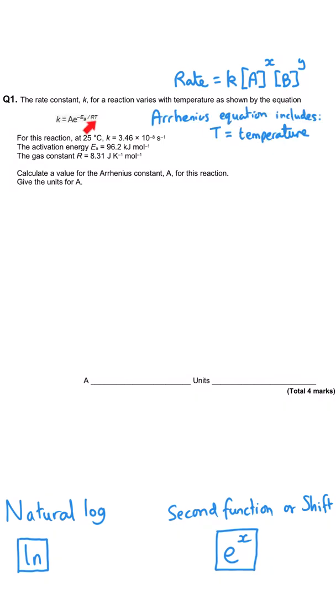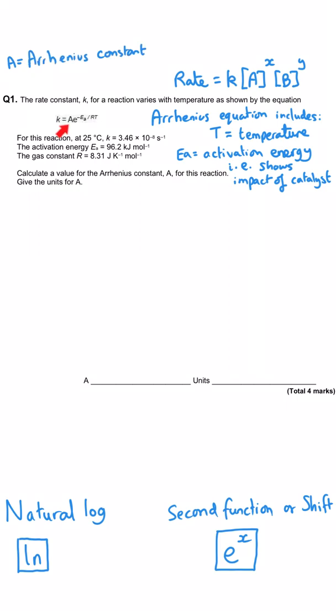In the Arrhenius equation, temperature affects the rate of reaction — a higher temperature gives a bigger value of K. The activation energy: if we use a catalyst, activation energy lowers, giving a bigger value of K because it's a faster reaction. And then we've got the Arrhenius constant A, which accounts for things such as surface area — anything that increases collision frequency without affecting the other quantities already mentioned.